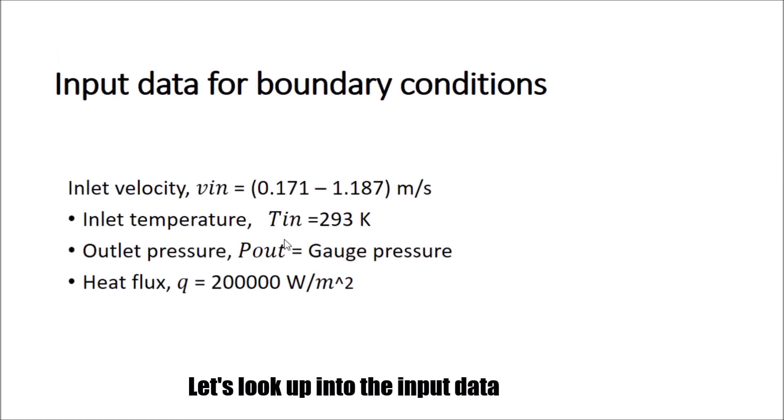Now we'll look into the input data, which are assumed for video making purposes. These are dummy values. Inlet velocity v_in equals 0.171 to 1.187 meters per second - you can assume any value out of this region. The inlet temperature T_in equals 293 K, which is pretty much room temperature. The outlet pressure P_out is gauge pressure, and the heat flux is 200,000 watts per meter squared.